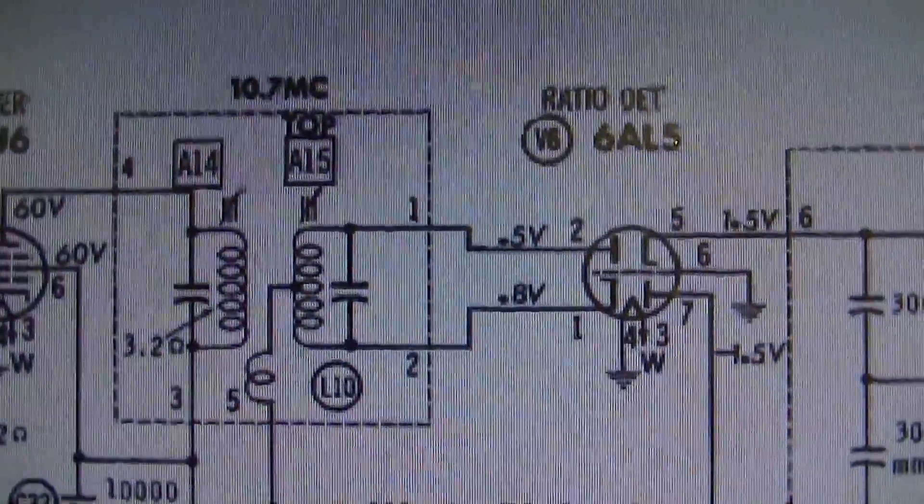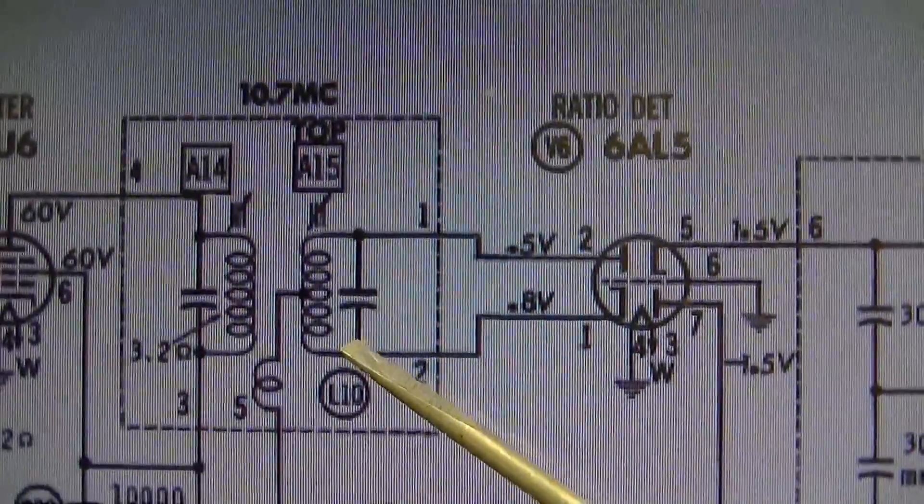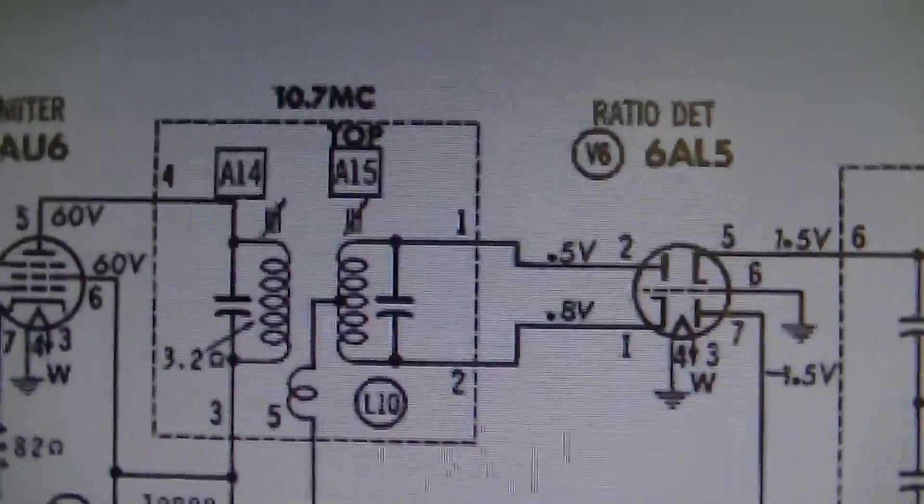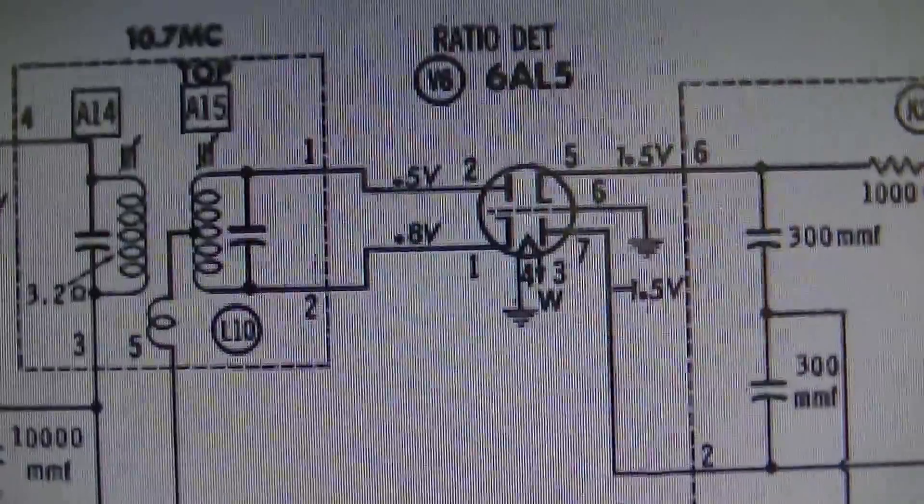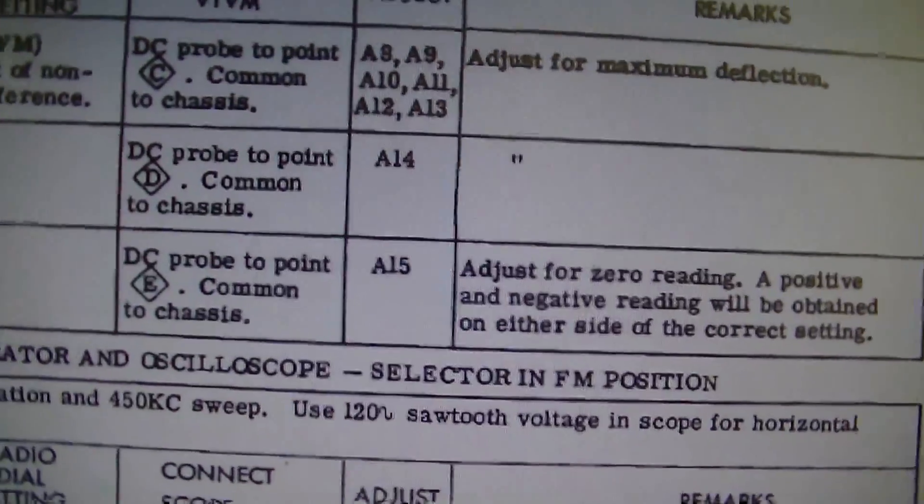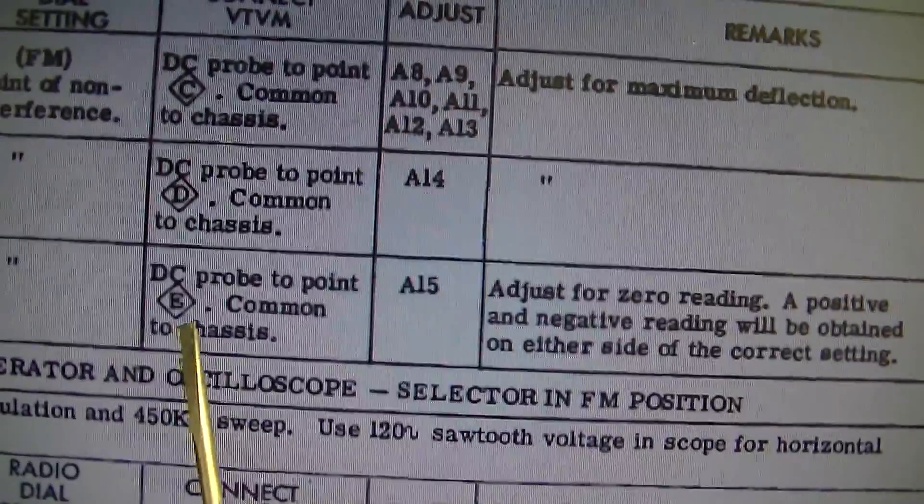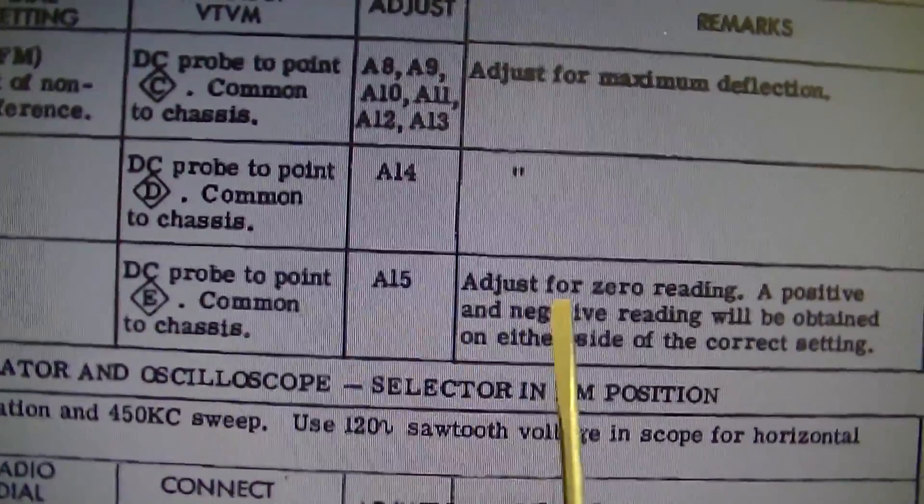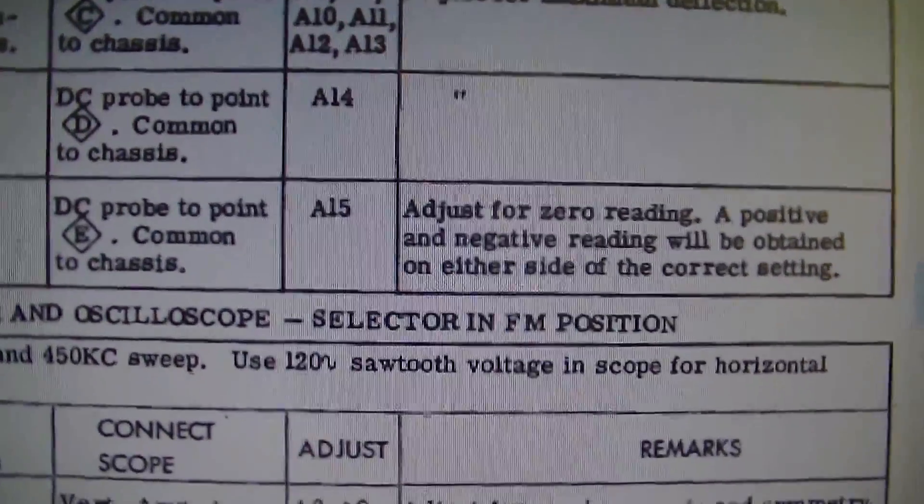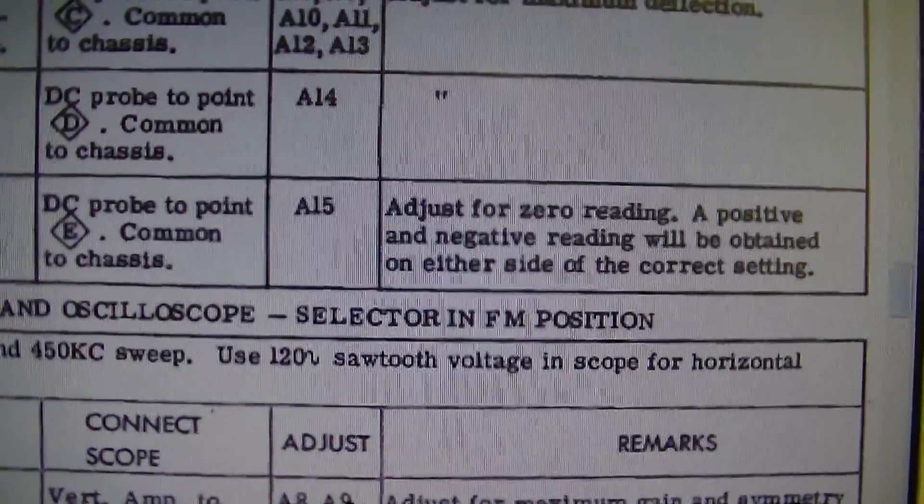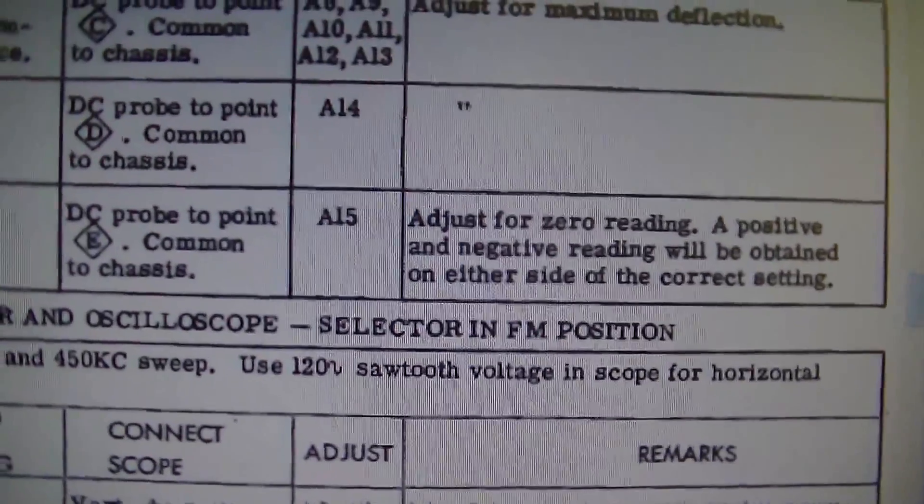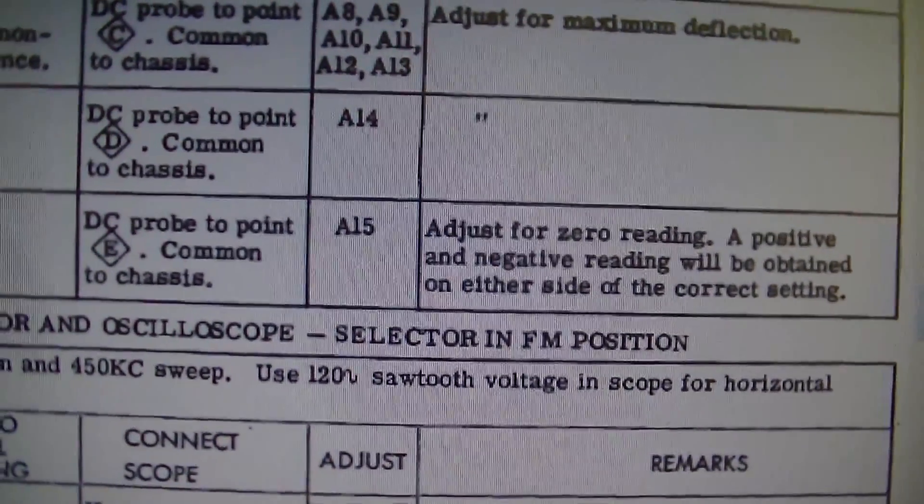So what we're going to do is we're going to put a variable capacitor here. Keep in mind, I have not turned the slugs in here. I have not touched those. I will do that very last. And then we need to do the balancing adjustment. So on this one we're going to need to do this, which is DC probe to point K and then low to ground. And we want to adjust for a zero reading, positive or negative. This is highly critical because the AFC will never work right if this thing is out of alignment with the rest of the IF. So this is almost the most critical alignment in the whole thing.